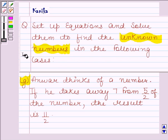Part G is: Anwar thinks of a number. If we take away 7 from 5 by 2 of the number, the result is 11 by 2.